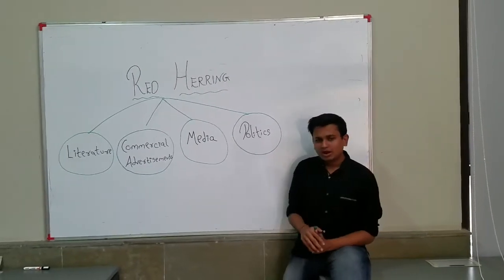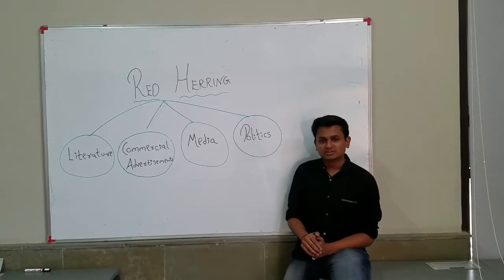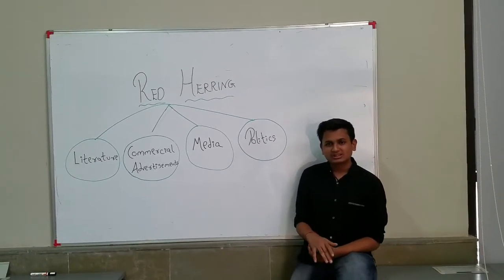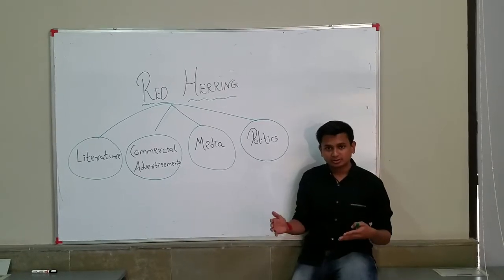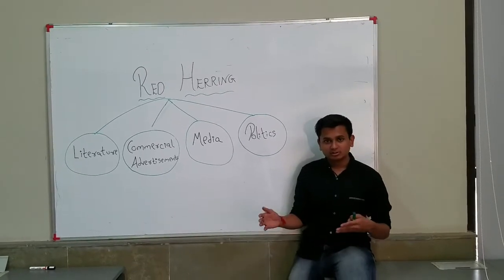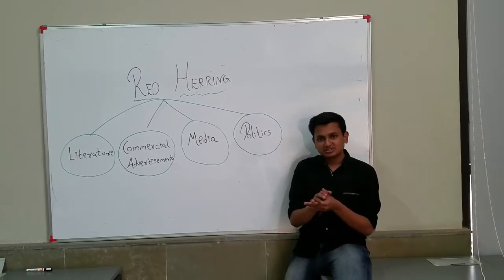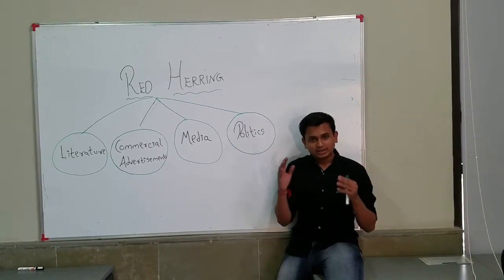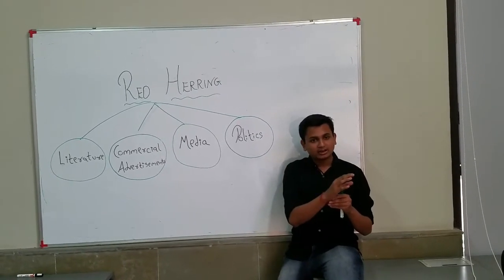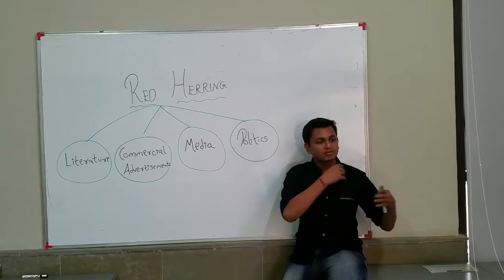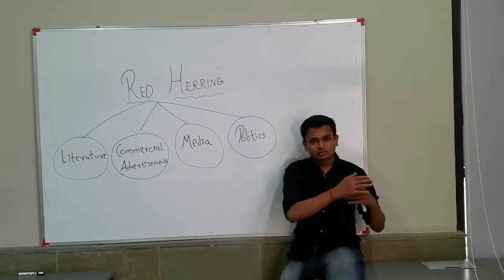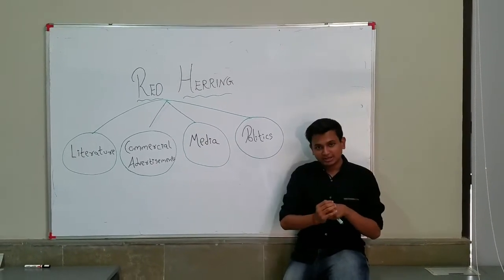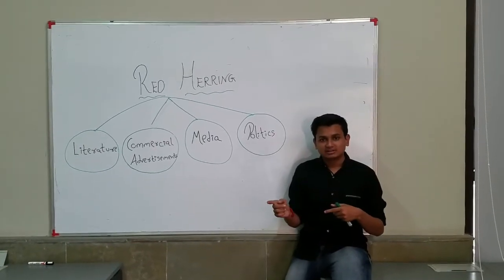Talking about literature — we have all read the famous novels by Arthur Conan Doyle featuring Sherlock Holmes. Until the very end, you are not able to decide who the real culprit is, because your attention is deliberately diverted toward another character and you focus on finding their flaws. Only at the end do you discover the real culprit is someone else — that diversion is the red herring.